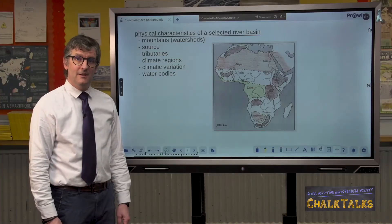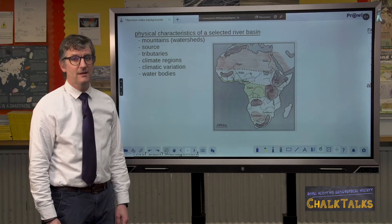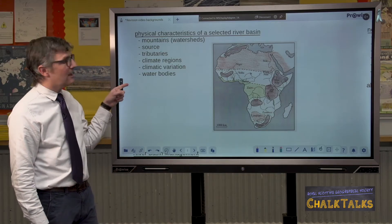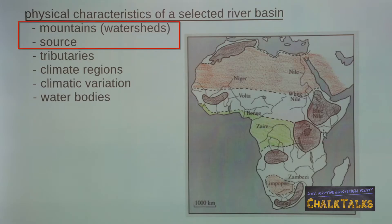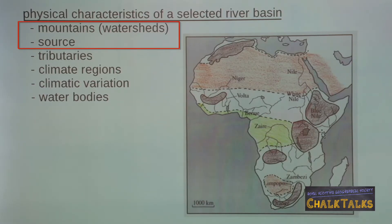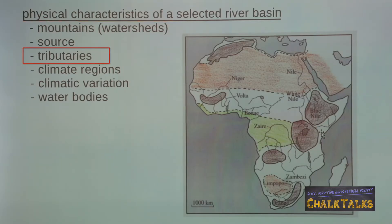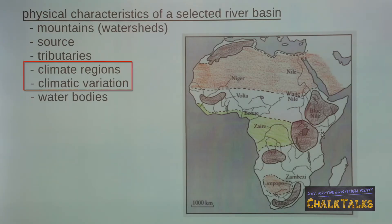For the river basin that you have studied, you will need to understand the broad physical characteristics, some of which are listed on the slide here. You will need to know about the source of the river, usually found in mountainous areas where they create a watershed. You should also know about the tributaries that flow into your river, as well as climatic information — particularly variation in temperature and precipitation between different parts of the basin and variation through the year.